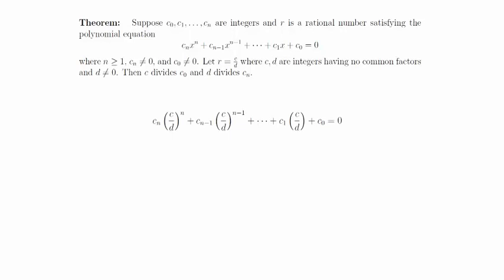We can clear the denominators by multiplying through by d^n. From here we are going to take this last equation and do two different manipulations to it.